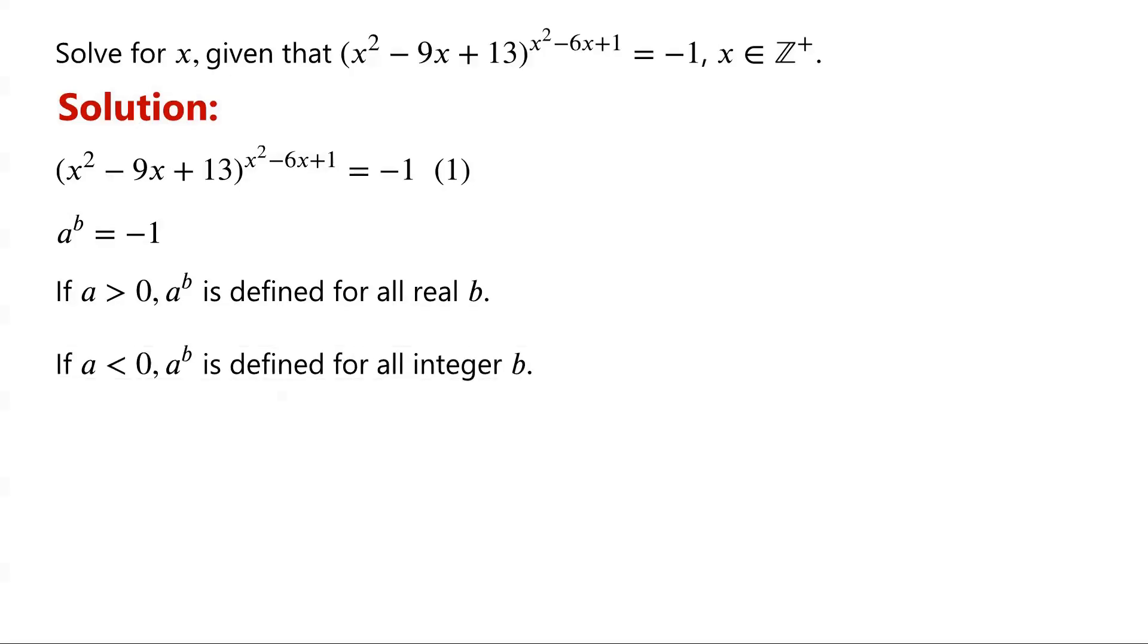If a is less than 0, then a to the power of b is defined for all integers b. If a equals 0, then a to the power of b is defined for positive real numbers b, and a to the power of b is equal to 0.